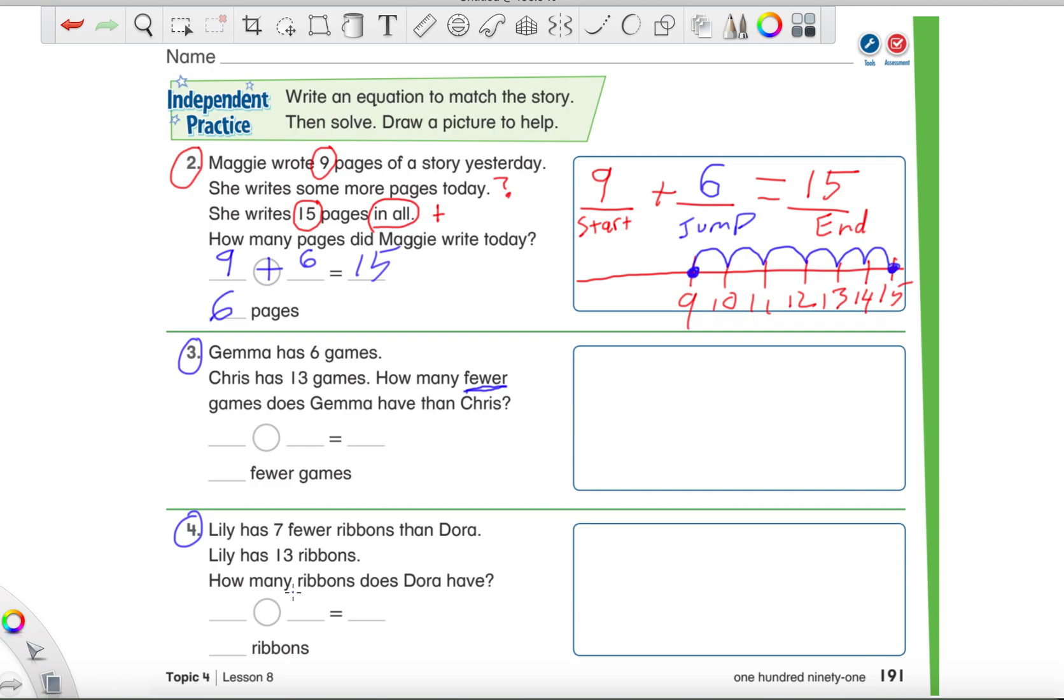Now this is a tricky one. So Lily has 7 fewer ribbons than Dora, and Lily has a total of 13. So they're saying that Dora has more. So Dora equals more. I'm giving you a big hint right there. So if we see more, you think it's going to be a plus or a minus right here? Just saying. But be very careful. Take your time with it. That's it. Go ahead, try number 3 or 4 on your own. And of course, if you're confused, make sure you let your teacher know. But I hope that you guys are getting this and it's not too bad. And as always, I hope you guys have a great day and I'll see you next time.